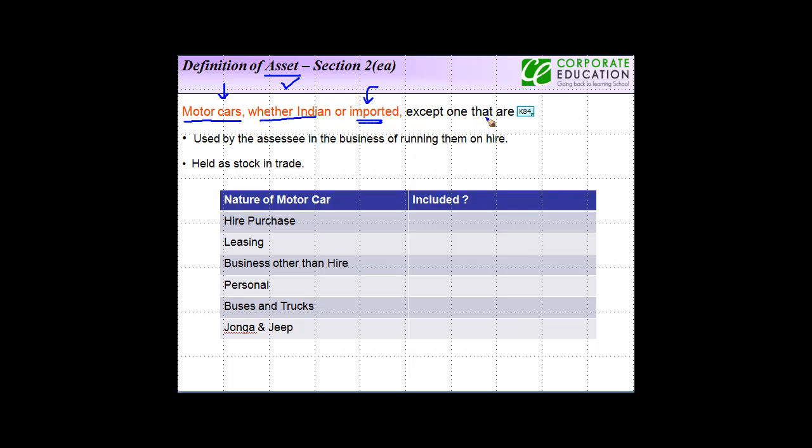Except the ones that are used by the assessee in the business of running them on hire. So let us take the case of someone like a cab agency who gives cars on hire. If the cab agency is a company which is forming its accounts, then a motor car will not be included within the definition of asset. Why? Because the cab agency is using the motor car in the business of running them on hire.